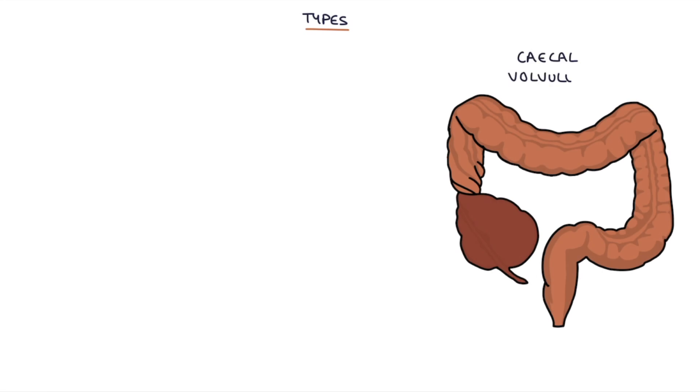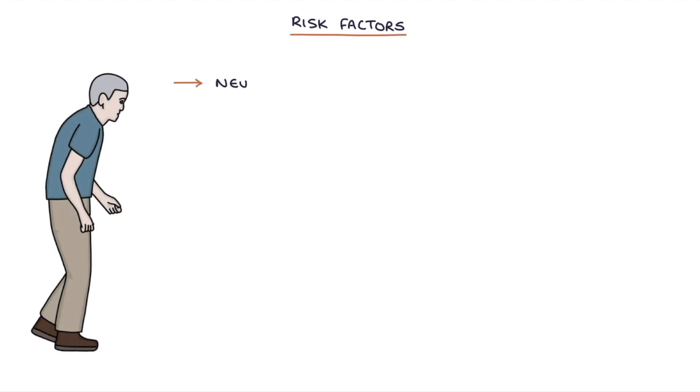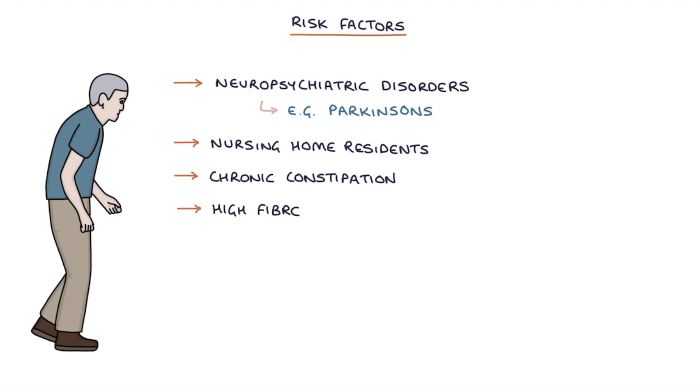Cecal volvulus is less common and tends to affect younger patients and the twist occurs in the cecum. So what are the risk factors for volvulus? The risk factors are neuropsychiatric disorders, for example Parkinson's disease, nursing home residents, chronic constipation, a high fiber diet, pregnancy and intestinal adhesions.